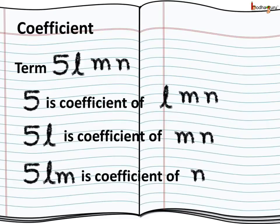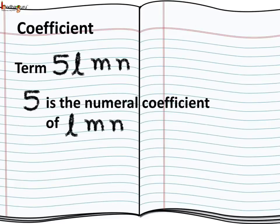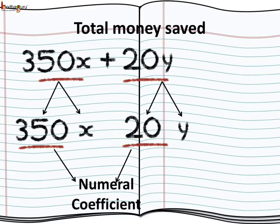Any factor of a term is called the coefficient of the product of the remaining factors. For example, in the term 5lmn: 5 is the coefficient of lmn, 5l is the coefficient of mn, and 5lm is the coefficient of n. The numeric factor of a term is also called the numeral coefficient. For instance, 350 is the numeral coefficient of the term 350x, and 20 is the numeral coefficient of the term 20y.